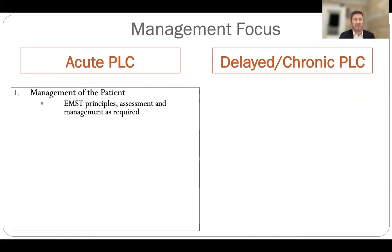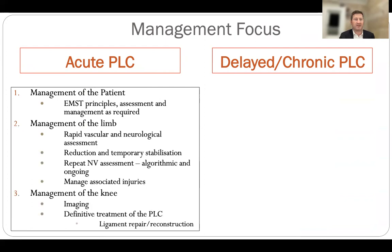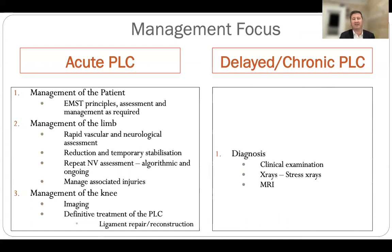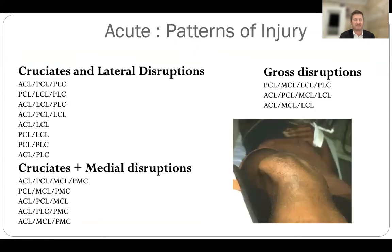Acute injuries involve management of the entire patient from EMST principles, management of the limb including the vascular and neurological structures, and then definitive management of the knee. In the delayed case, it's the diagnosis that can be more of a challenge, and management of the knee is the focus with few other associated injuries complicating things as in the acute case.